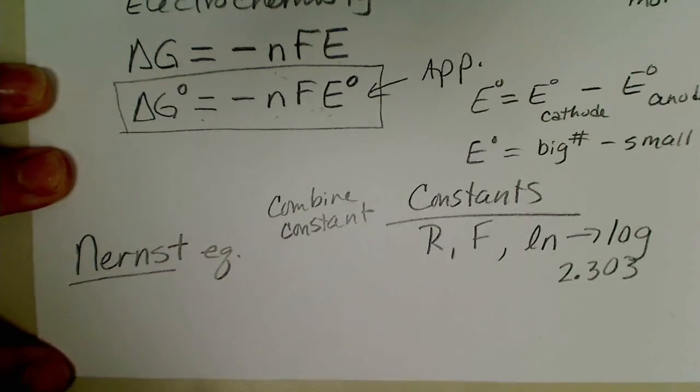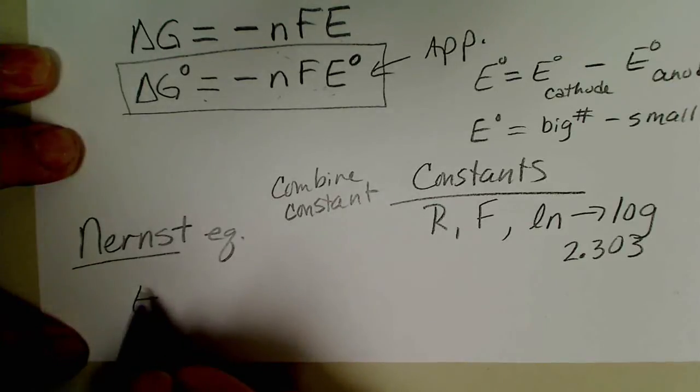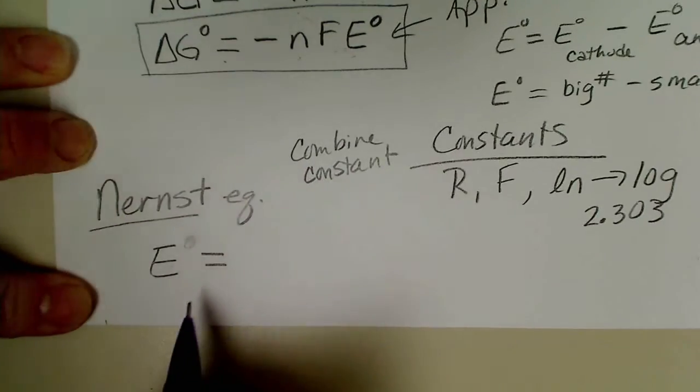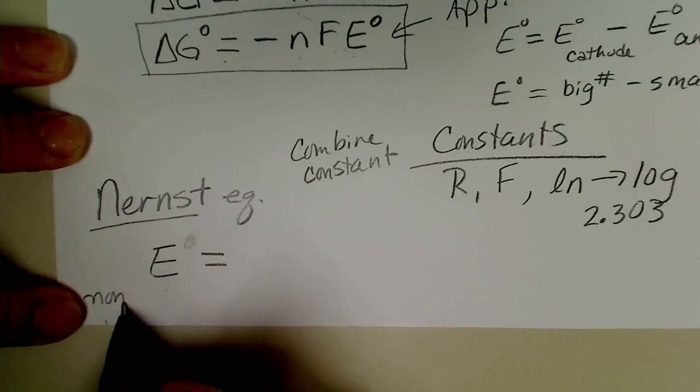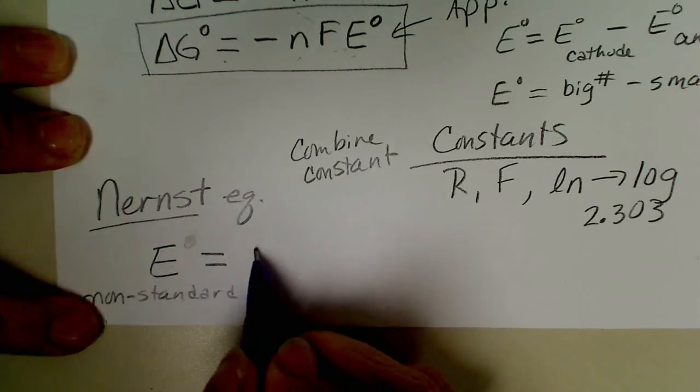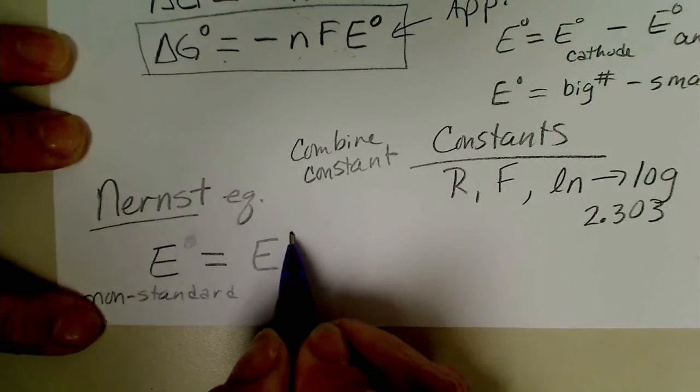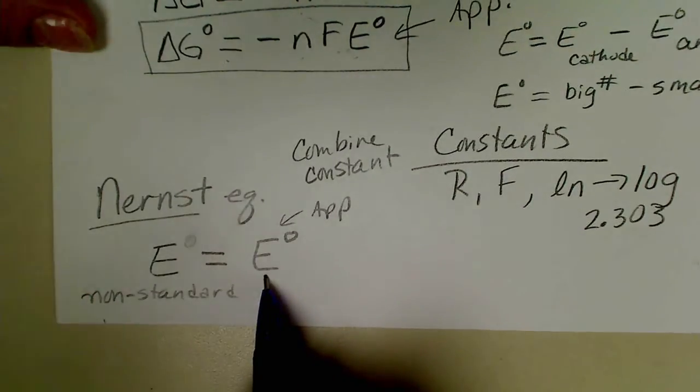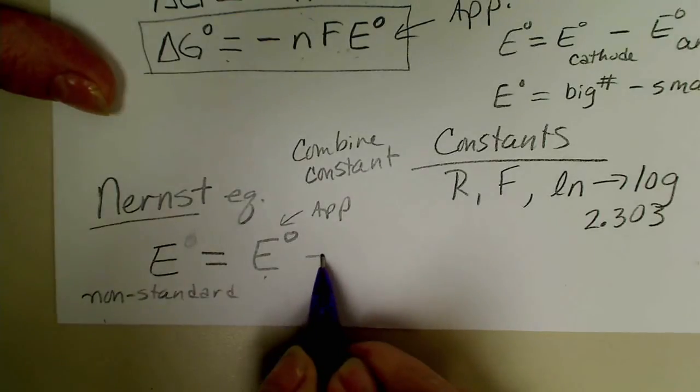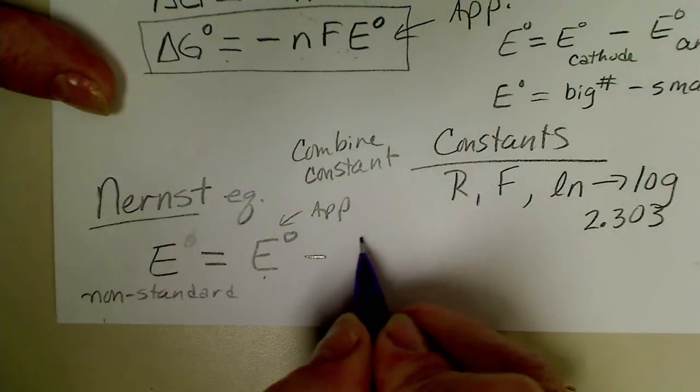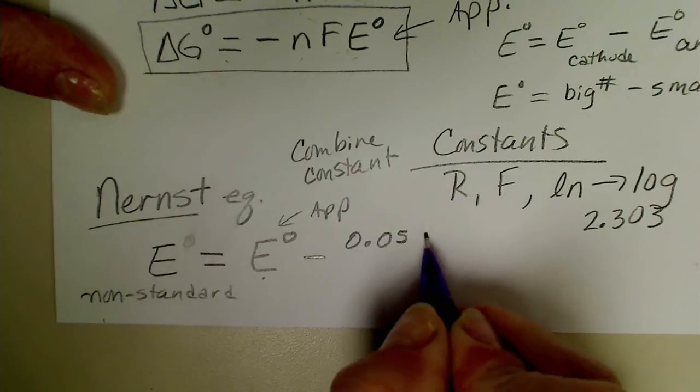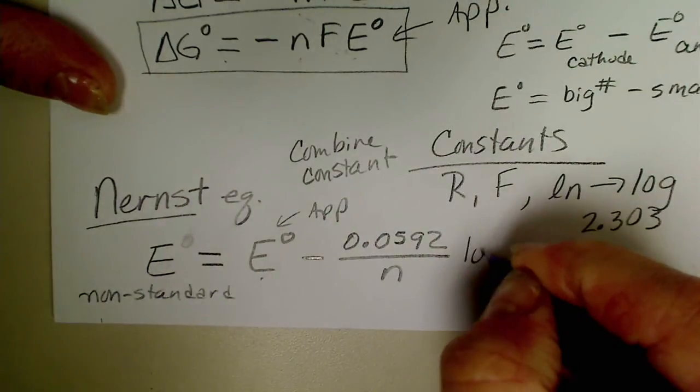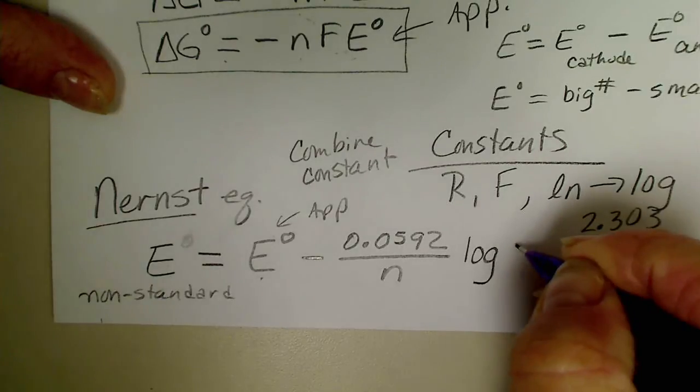That equation turns into the cell potential at non-standard conditions would be equal to the cell potential at the standard conditions. Again we use the appendix to come up with that value. Then combining all of the constants get 0.0592 divided by n, and this gentleman used the base ten log instead of the natural log.